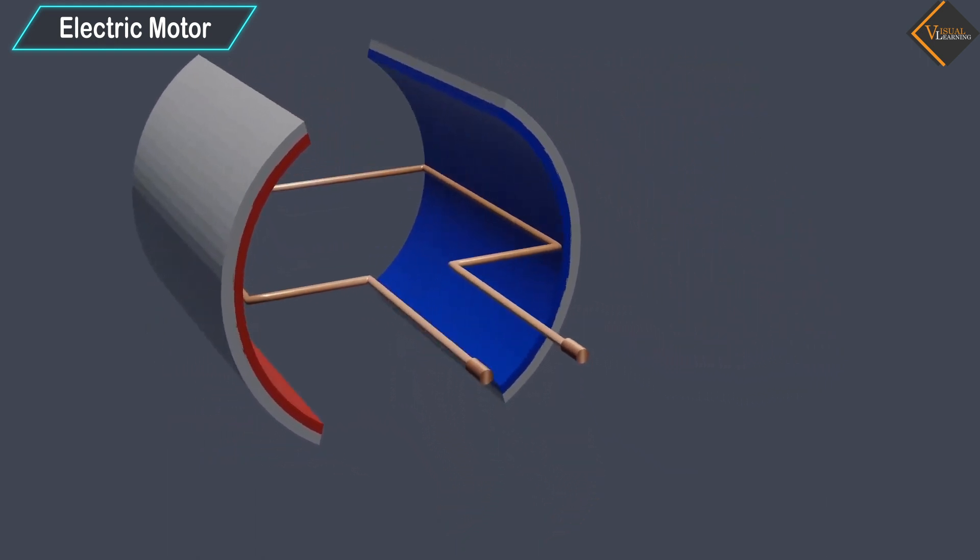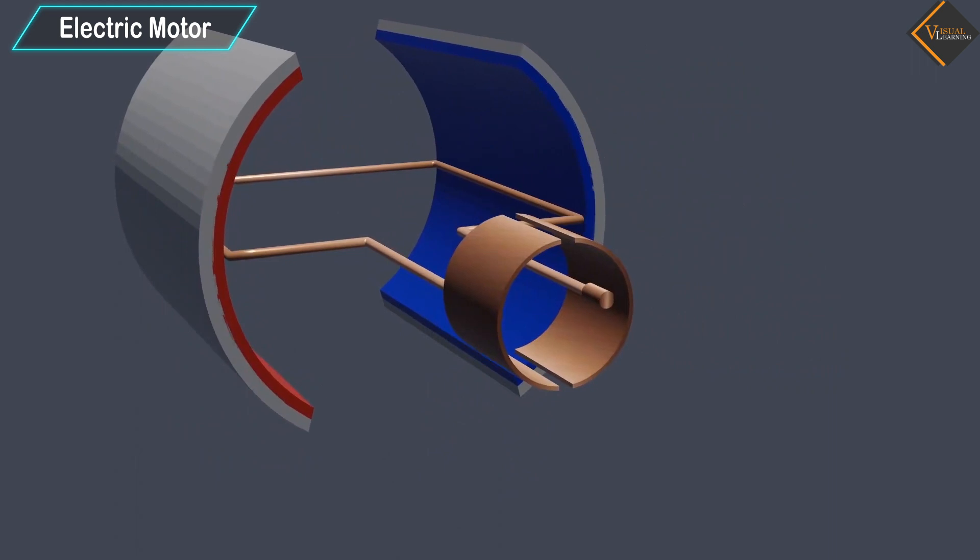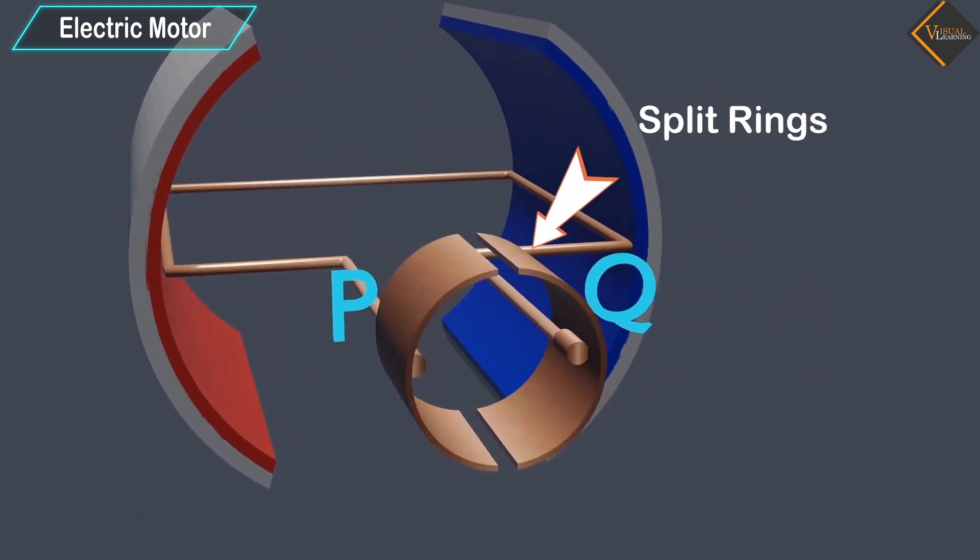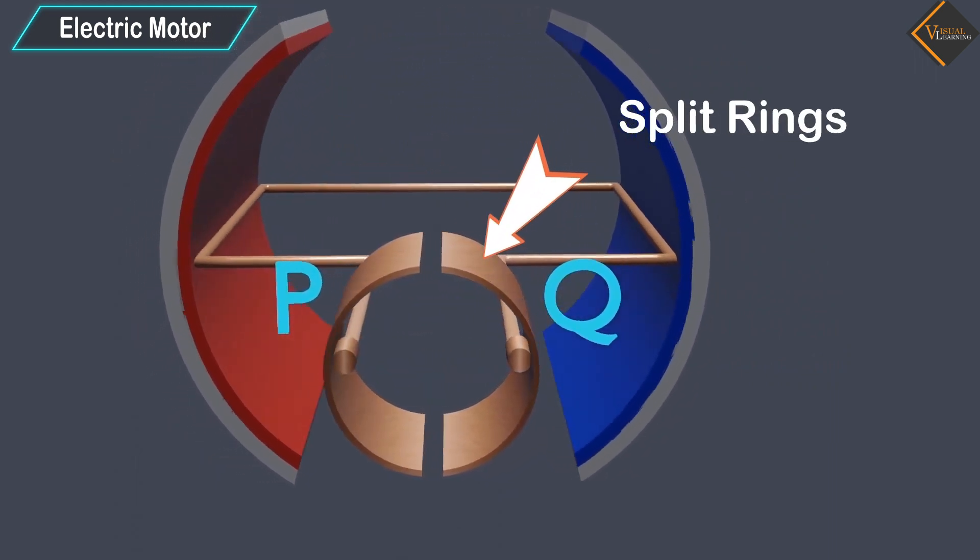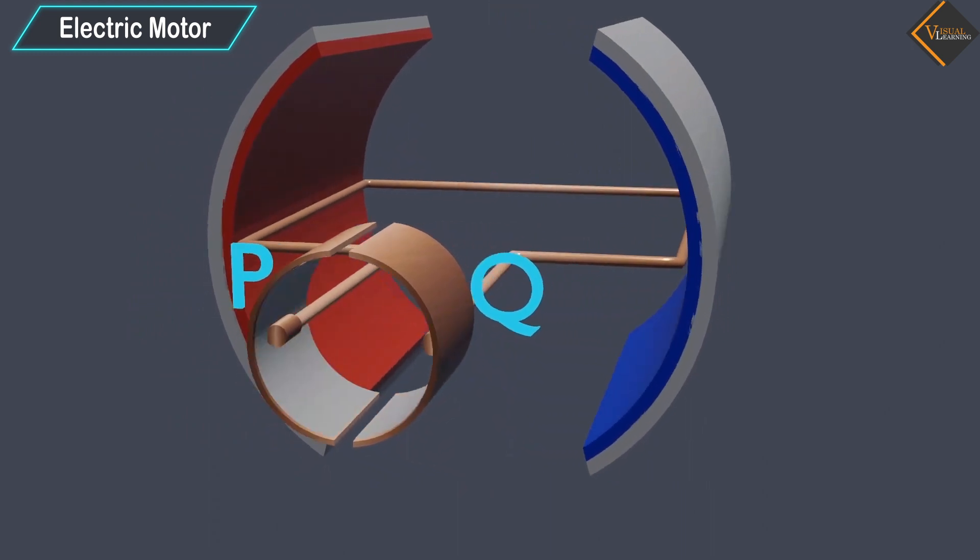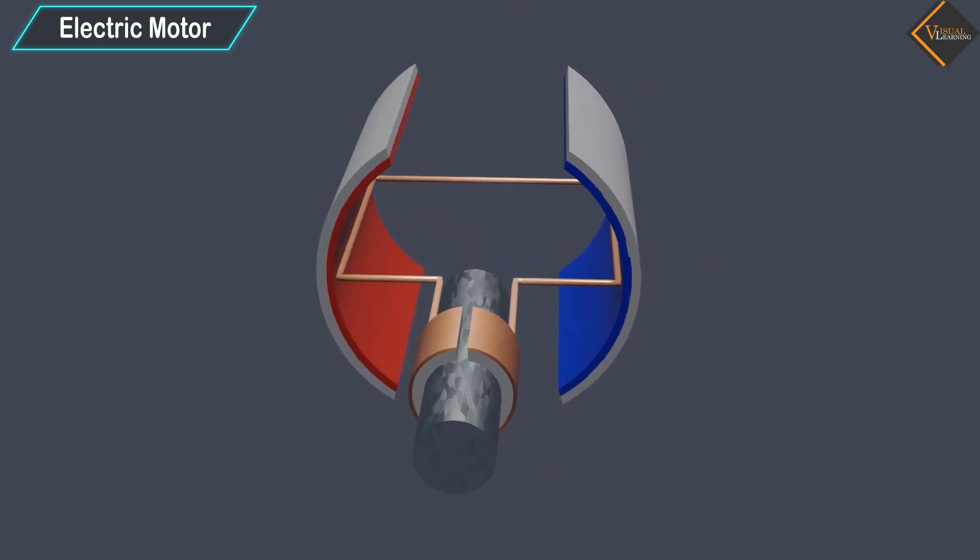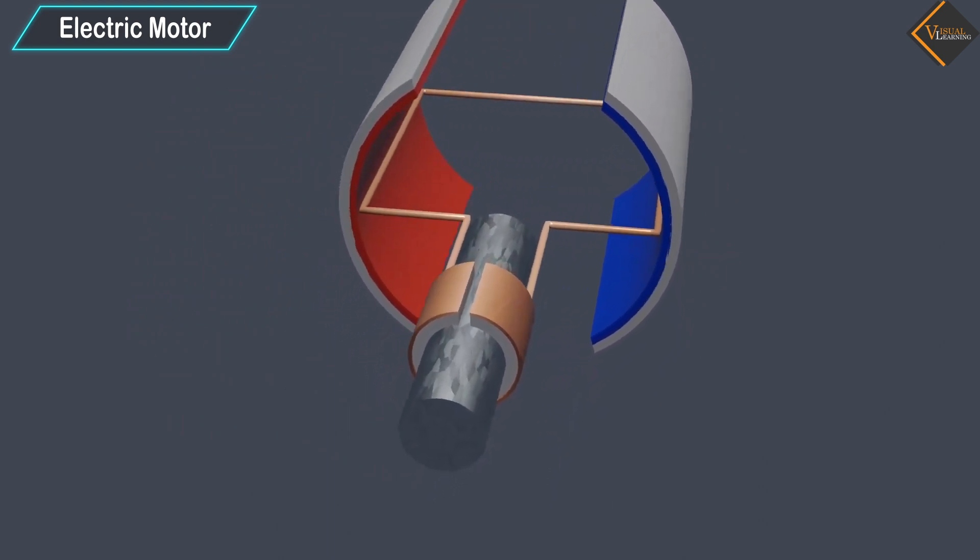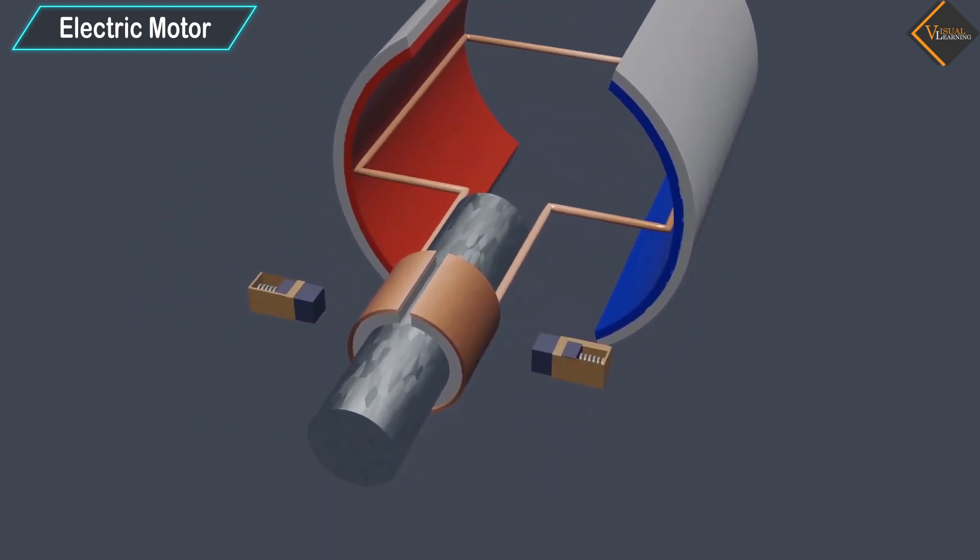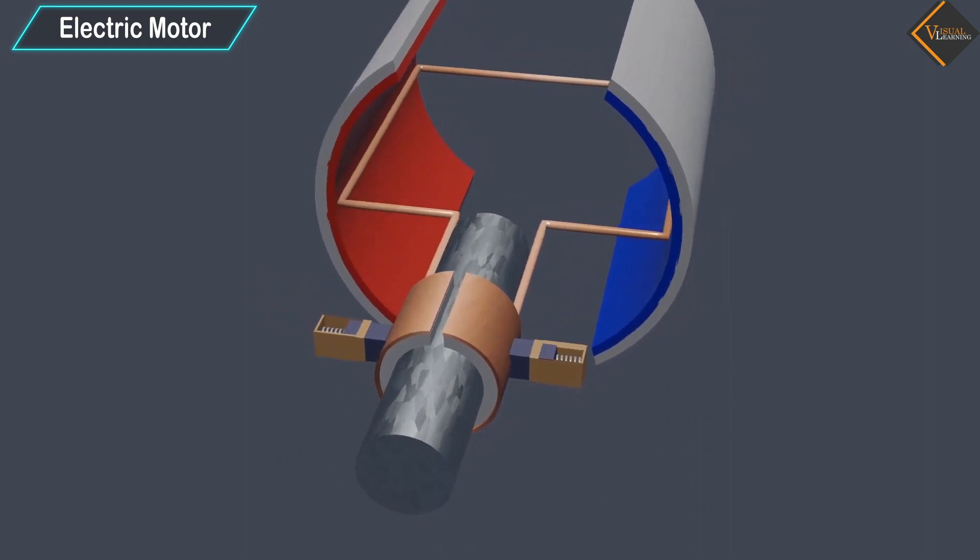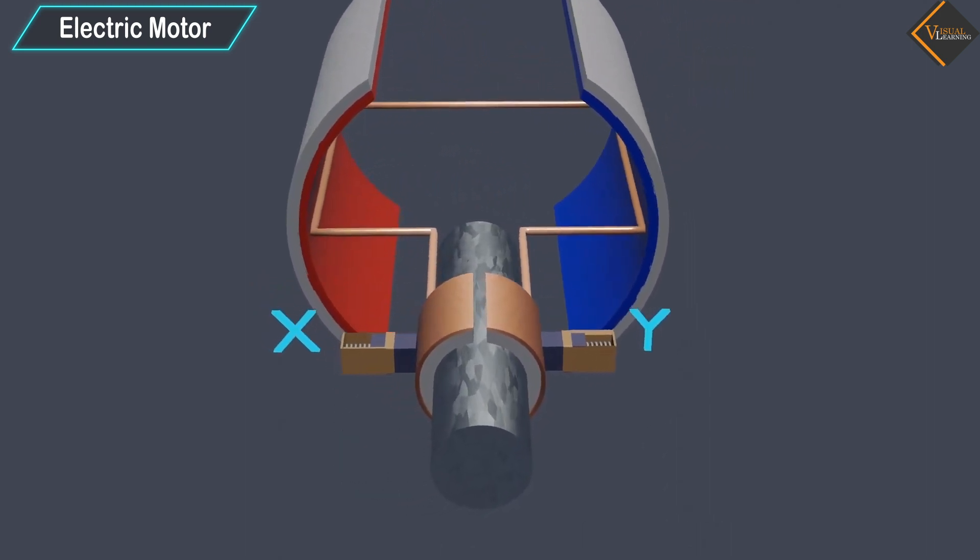The ends of the coil are connected to the two halves, P and Q, of a split ring. The inner sides of these halves are insulated and attached to an axle. The external conducting edges of P and Q touch conducting stationary brushes X and Y, respectively.